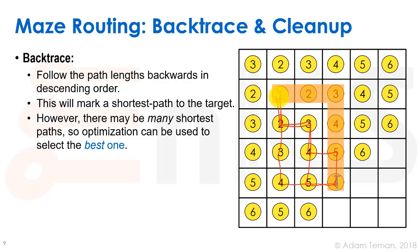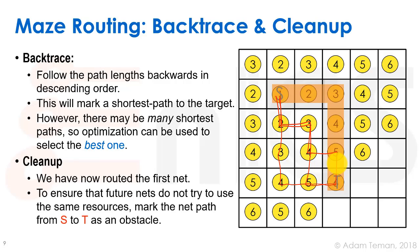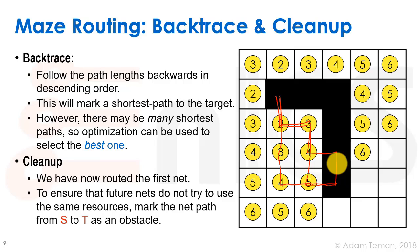Backtrace marks the shortest path to the target. However, there may be many shortest paths, so optimization can select the best one — though determining the globally best shortest path is very hard with large designs. We select one with a heuristic. Then we do cleanup: we mark the entire routed net as an obstacle, since we can only put one net in each grid box. All the distance markers are erased as they're irrelevant for the next step.